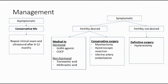Under medical treatment there are two groups, which are hormonal and non-hormonal, as shown in this table. For conservative surgery, we can do myomectomy, hysteroscopic resection, or uterine artery embolization. And if the patient is already of older age and does not desire any children in future, we can do definitive surgery, which is hysterectomy.